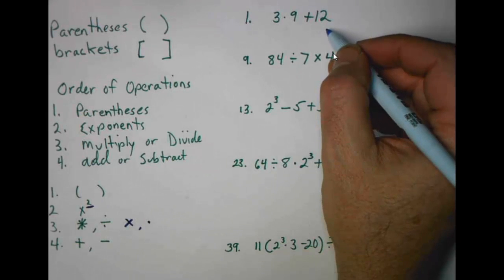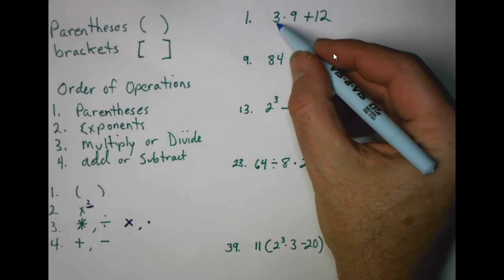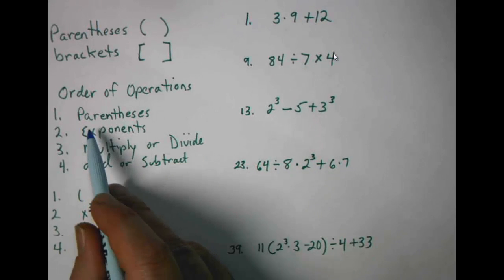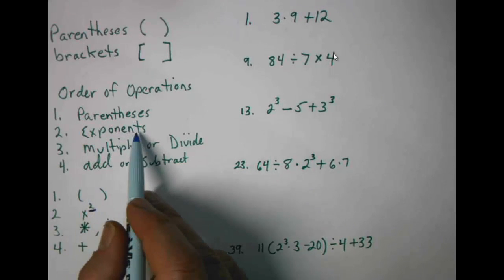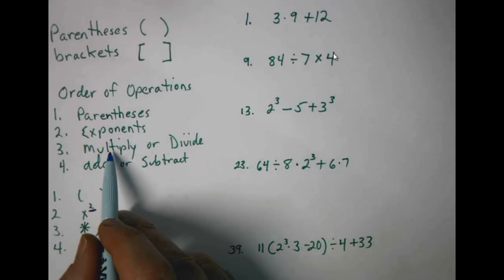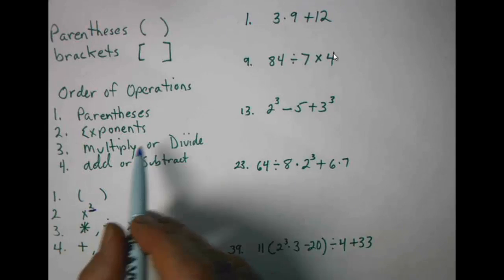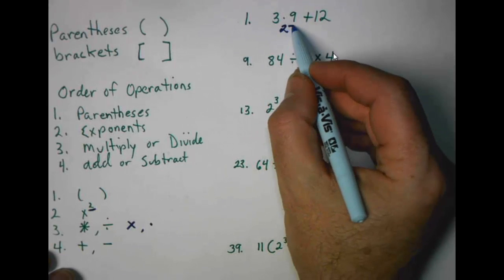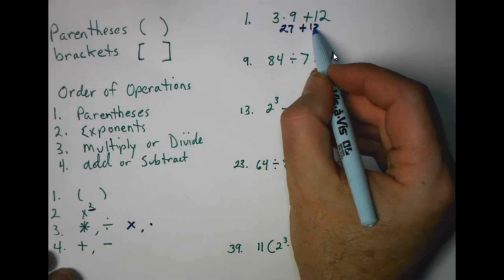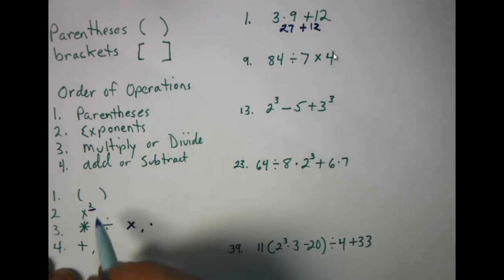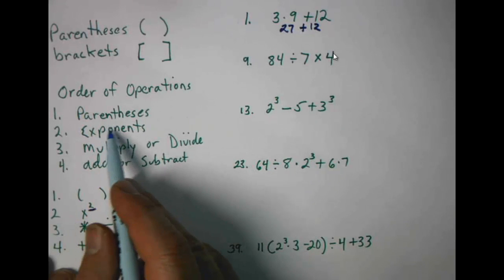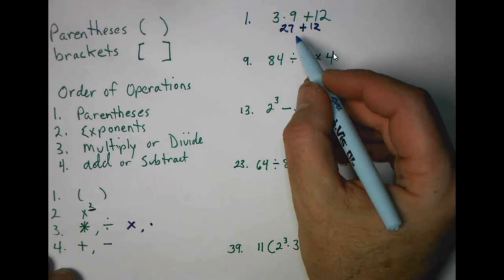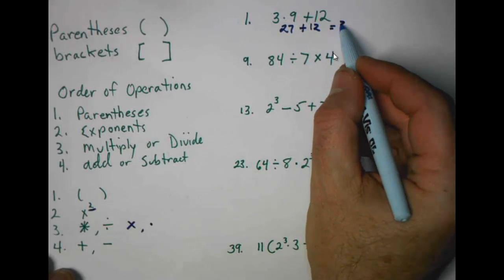In problem number one in our homework, we have three times nine plus twelve. We go back to our order of operations — no parentheses, no exponents, but we do have a multiplication. So we do that first, reading left to right. Three times nine is twenty-seven, drop down the plus twelve, then twenty-seven plus twelve gives us a total of thirty-nine.